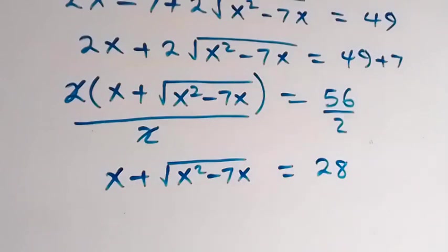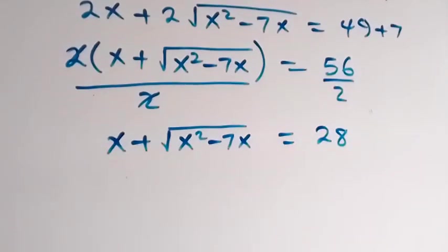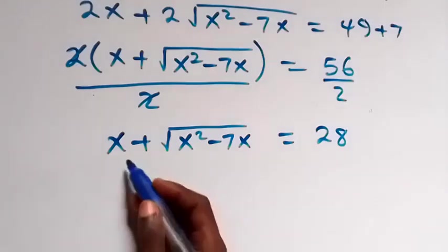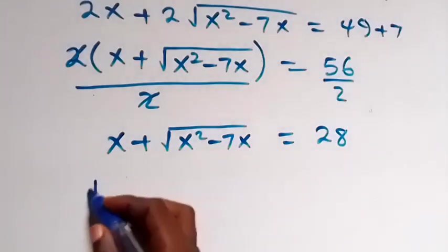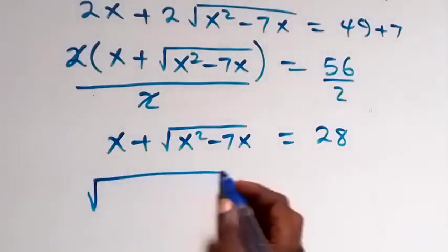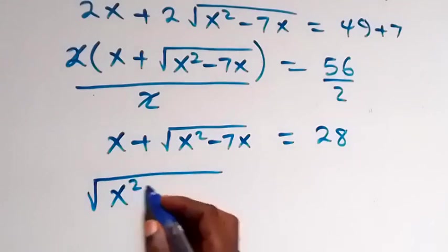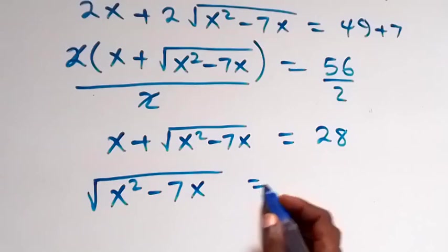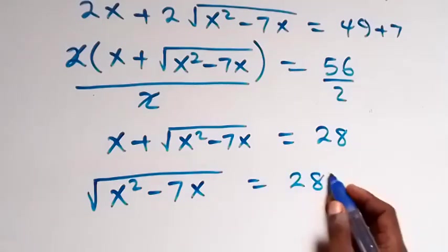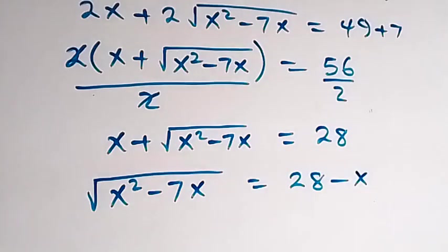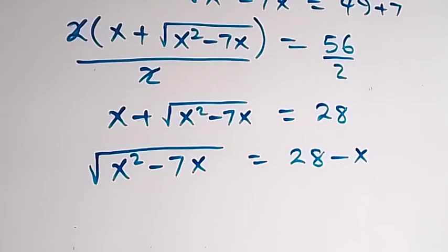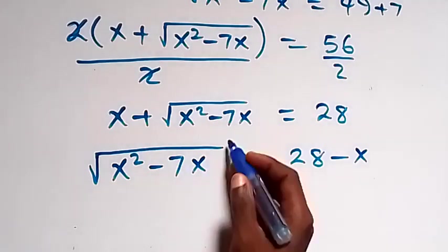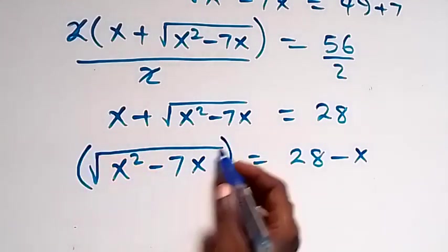Taking x to the right side, root of x squared minus 7x equals 28 minus x. To remove the square root, we square both sides.